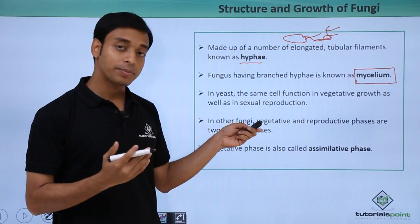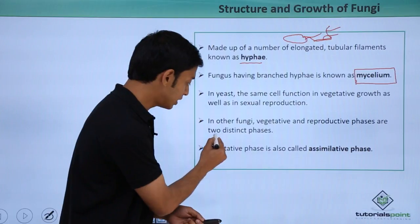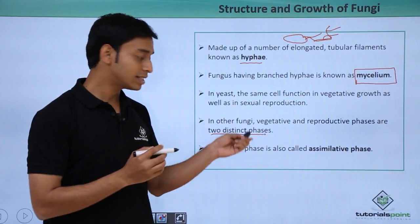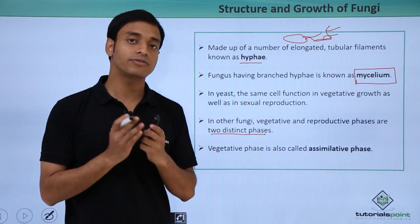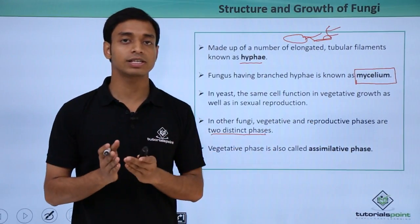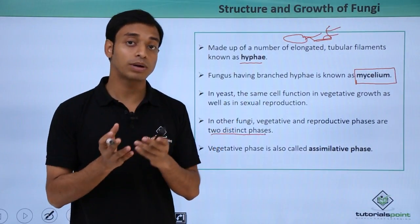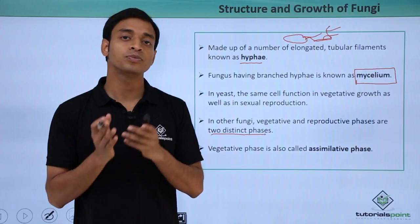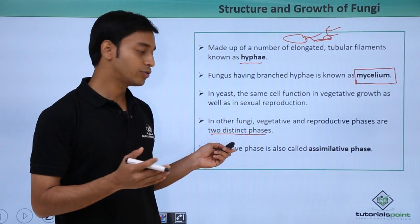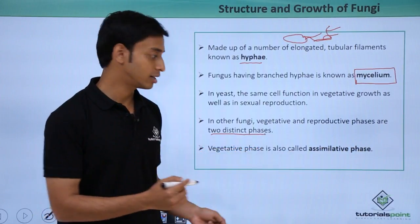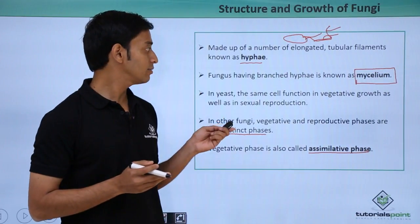In some other fungi, the vegetative and reproductive phases are two distinct phases — unlike yeast, where the same cell functions in both. The vegetative phase is also known as the assimilative phase.